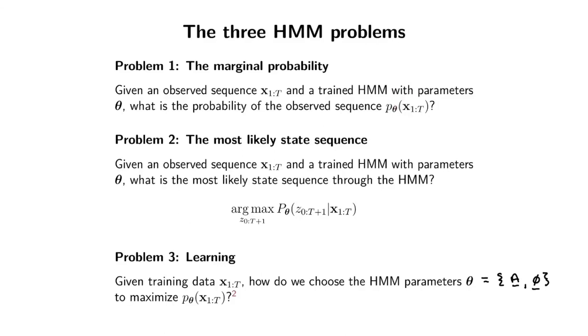I put theta there to explicitly tell you this is this particular hidden Markov model. But sometimes, like many machine learning people, I'm lazy and sloppy and forget to write the theta there. But you should remember it's the probability of, for example, a sequence given my current parameters of the model.